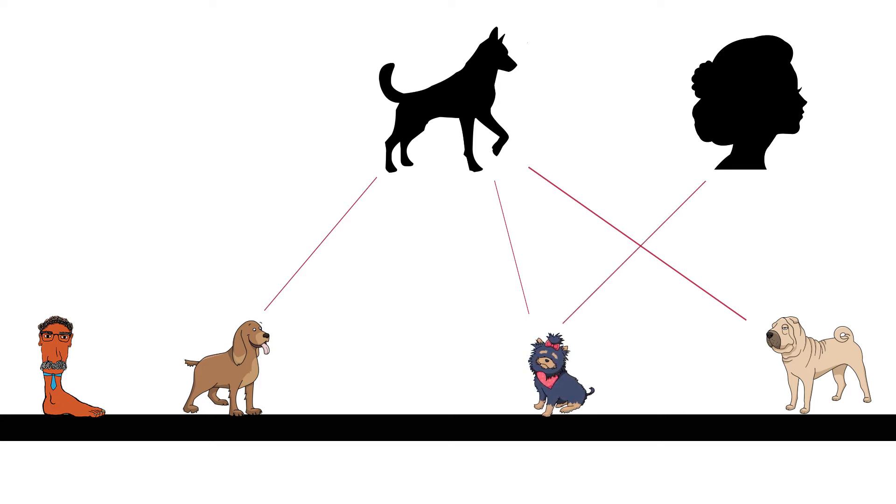Forms or ideas are the unchanging models or essences of all things. To know something, to know what a dog is, it is not enough to know an individual dog, but the essence shared by all dogs. In the same way, knowledge of beauty is not to have seen something beautiful, but to have the knowledge of the form of beauty itself.